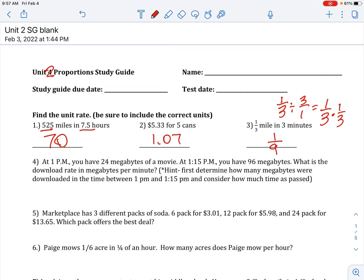Number 4, you have 24 megabytes of a movie at 1 p.m., at 1:15 you have 96. What is the download rate in megabytes per minute? For megabytes per minute, you're going to say 96 minus 24 over the minutes part, you're doing how long between 1:15 and 1 o'clock.